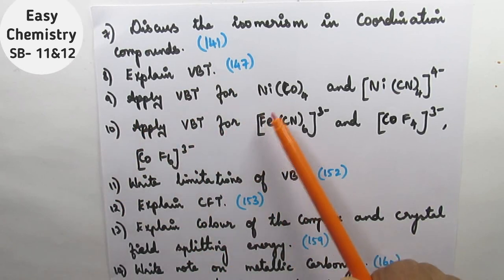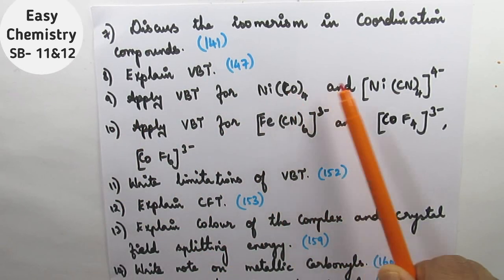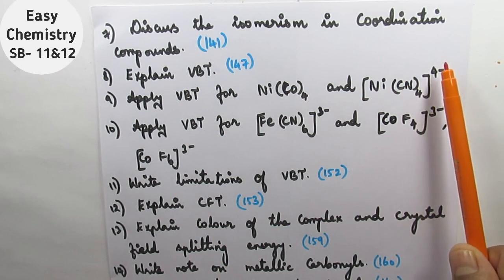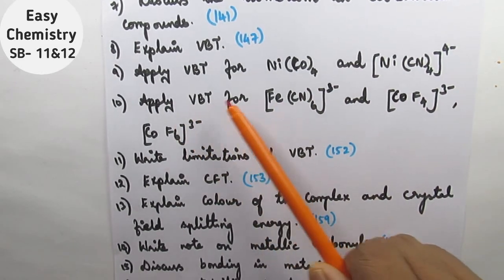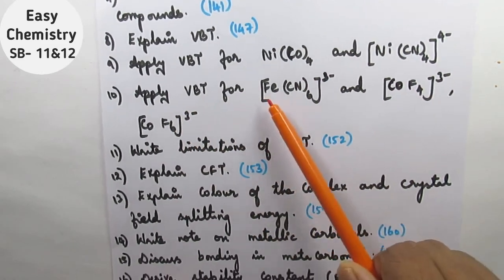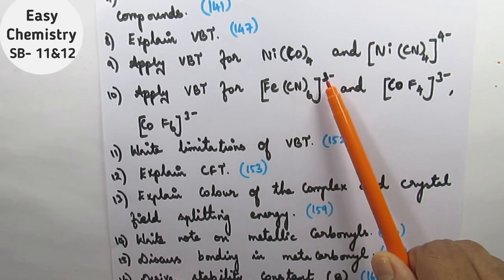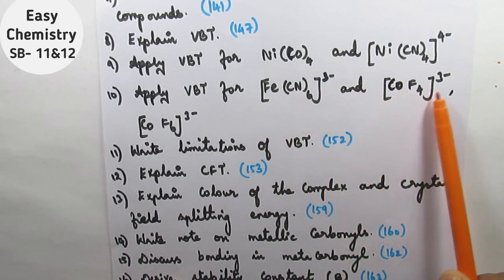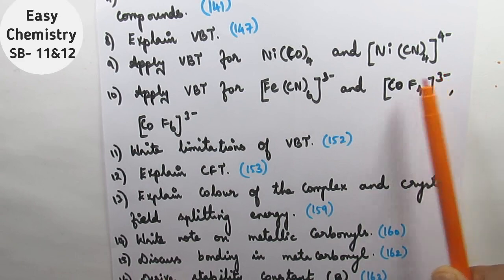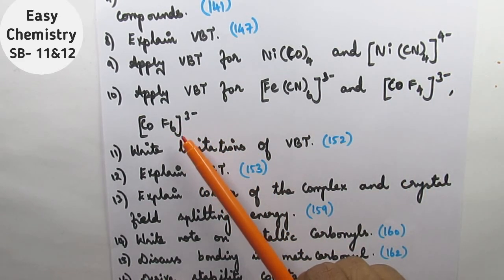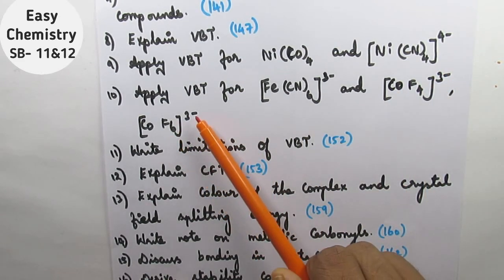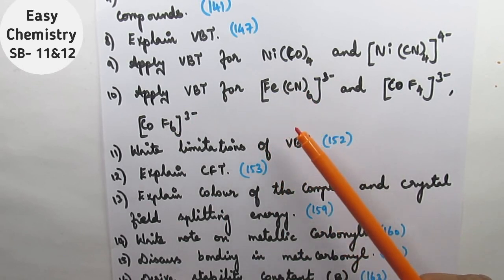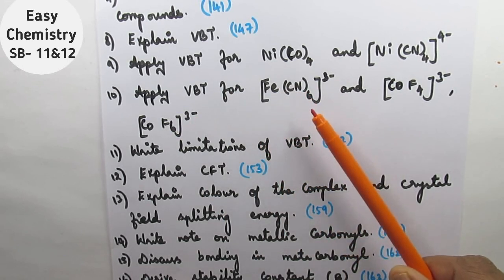Apply VBT for nickel tetracarbonyl Ni(CO)4 and [Ni(CN)4]4-. Apply VBT for [Fe(CN)6]3- and [CoF4]3- and [CoF6]3-. Apply VBT theory step by step. What is the geometry? What is the hybridization?